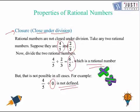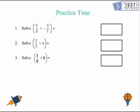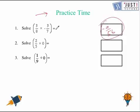Now we move ahead and will try some questions. Here are the questions for you — to try these questions, you can pause the video. The answer for question number 1 is minus 9 over 56, which is a rational number. So we can say that closure property holds under multiplication.